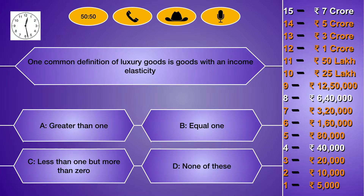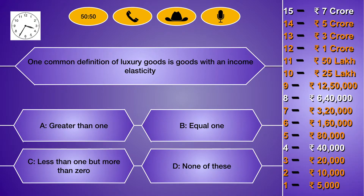One common definition of luxury goods is goods with an income elasticity: (A) greater than 1, (B) equal to 1, (C) less than 1 but more than 0, (D) none of these. The right answer is option A: greater than 1.